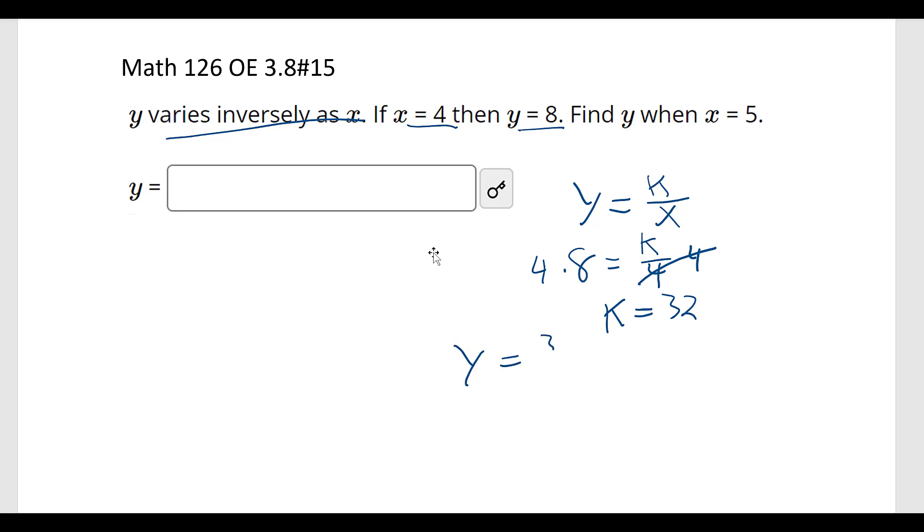So y equals 32 divided by x. So then it says find y when x is 5. So y equals 32 divided by 5, which would be 6.4.